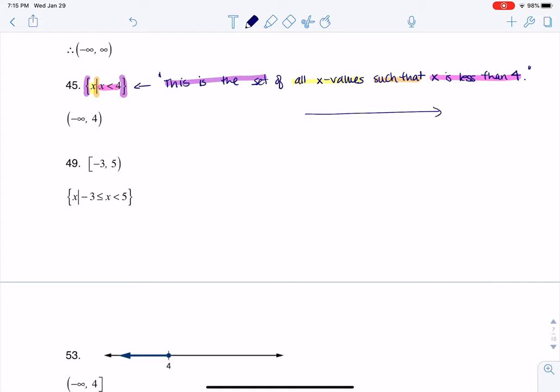If we want to think about that on the number line, here's 4 on the number line. It says strictly less than, not less than or equal to, so I'm going to put an open dot. And if it's less than, I want a shade to the left.